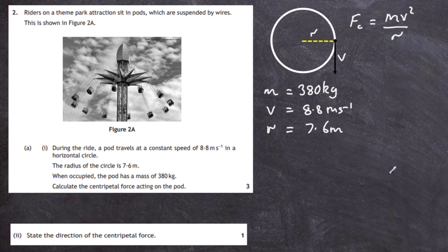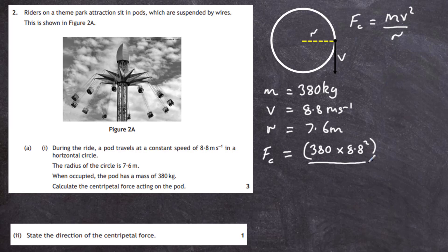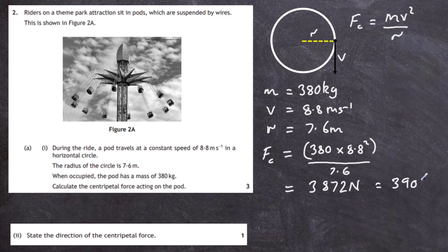All we have to do is plug those numbers into the centripetal force equation. So Fc equals the mass — 380 kilograms — multiplied by 8.8 squared, divided by r which is 7.6 meters. When we do that in our calculator, we get a value of 3872 newtons, which rounds to 3900 newtons to two significant figures. So the centripetal force is 3900 newtons.